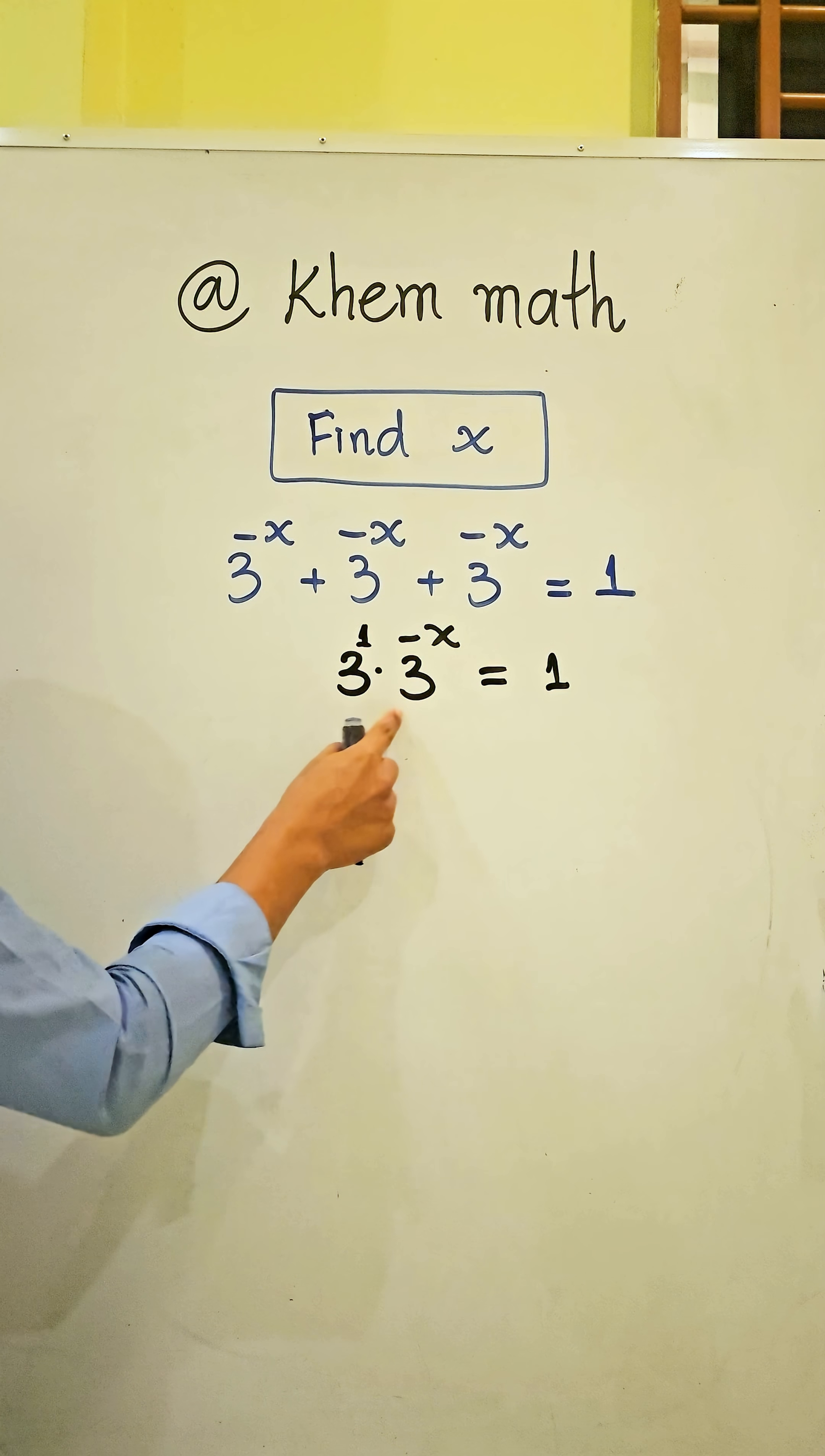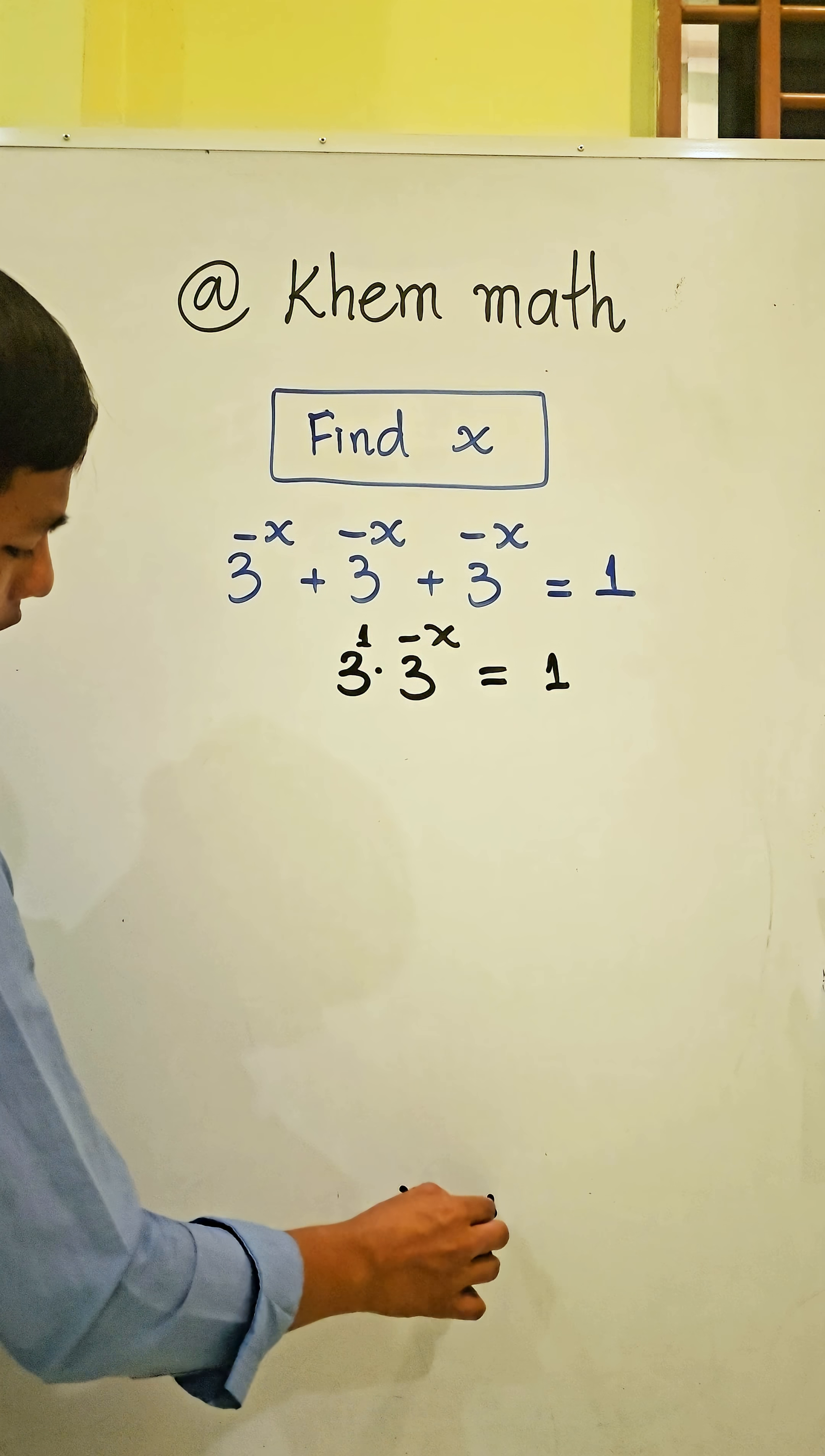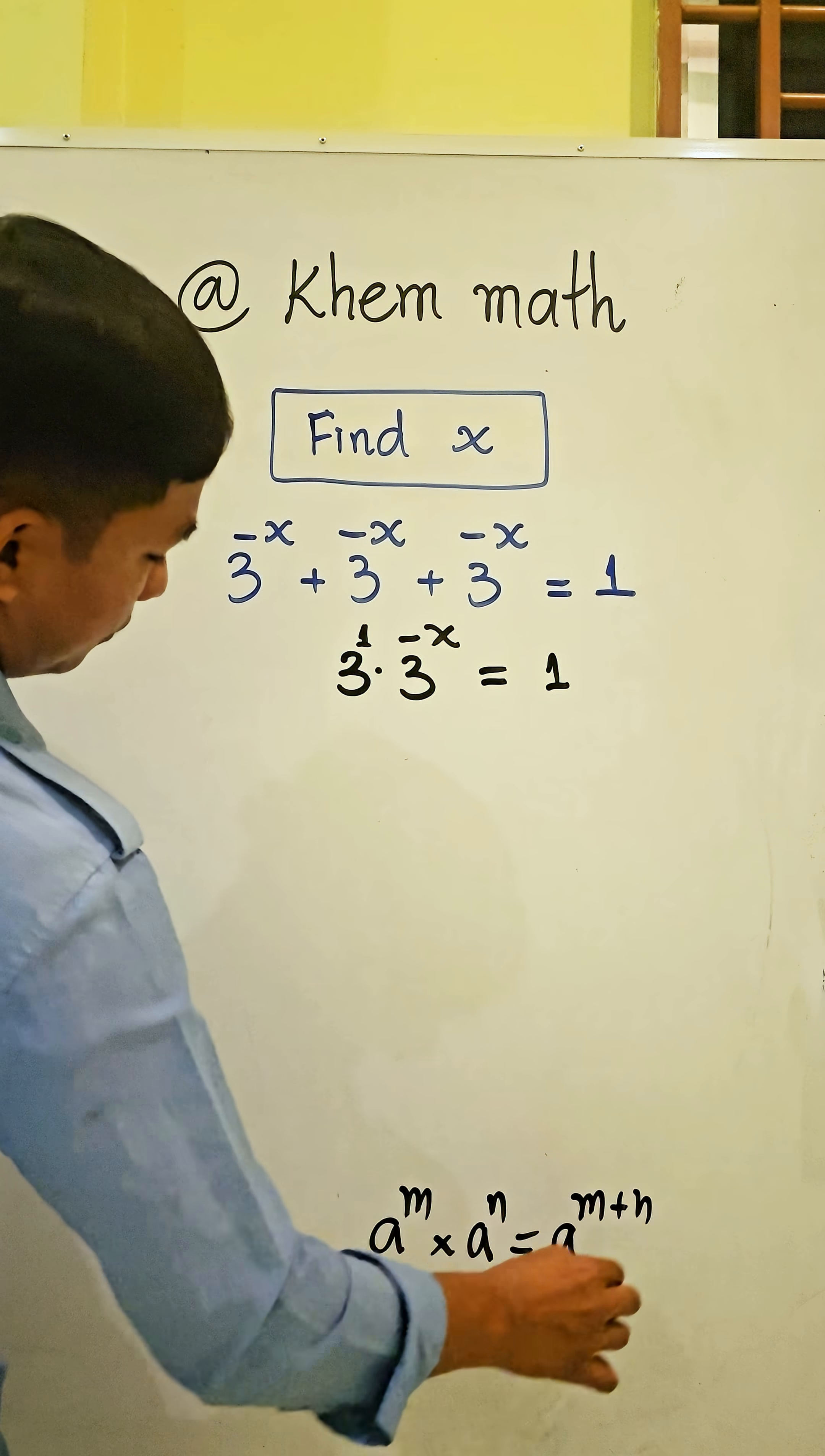So here we use the formula: a power m times a power n equals a power m plus n.